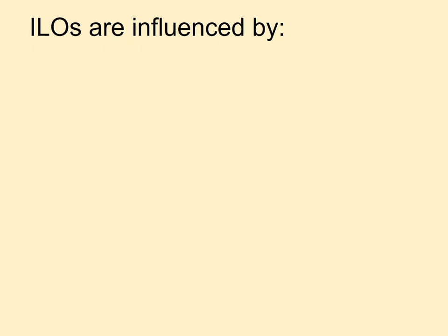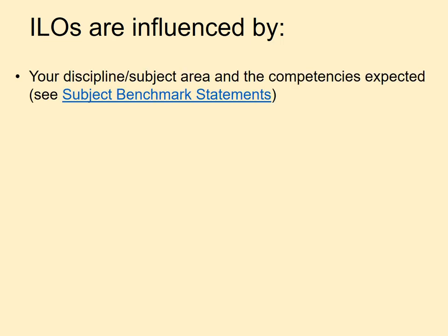As with activities and assessments, there is rarely a clear-cut set of ILOs that are right or wrong. Selecting appropriate ILOs is a bit of an art that requires you to consider and find balance among several different influences. The QAA provides subject benchmark statements that show what graduates might reasonably be expected to know, do, and understand at the end of their studies. These have been designed by regulators working in conjunction with professionals and education experts, and are meant to provide guidance without being too prescriptive.